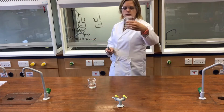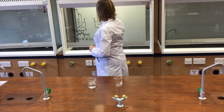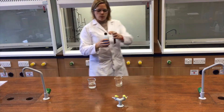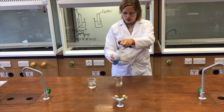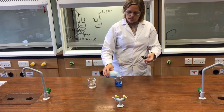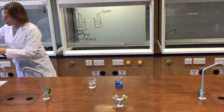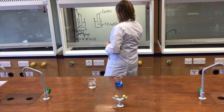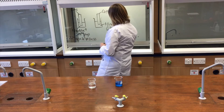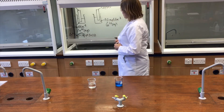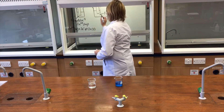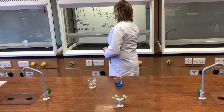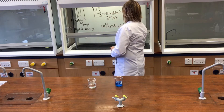In this other beaker I've got some copper metal. I'm going to add 1 mol per decimetre cubed copper(II) sulfate solution, about half a beaker full. That copper(II) sulfate solution also has a Cu²⁺ concentration of 1 mol per decimetre cubed. A similar equilibrium is set up: Cu²⁺ (aq) + 2e⁻ ⇌ Cu (s).